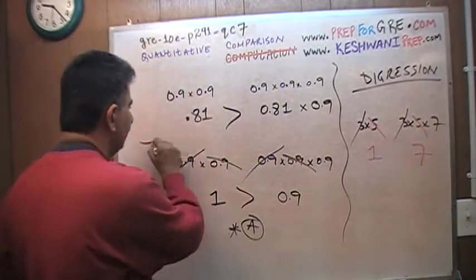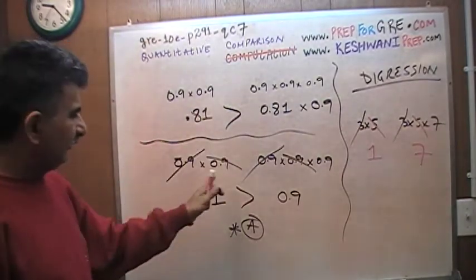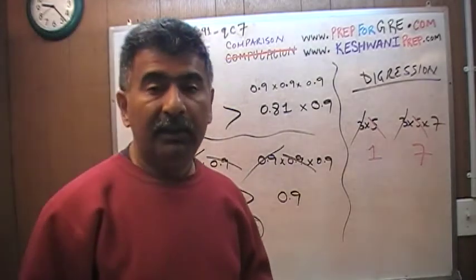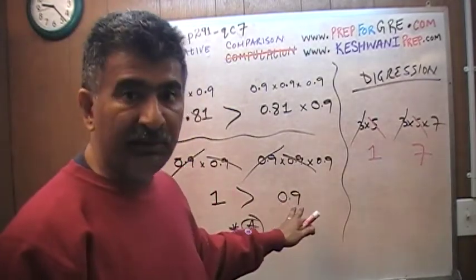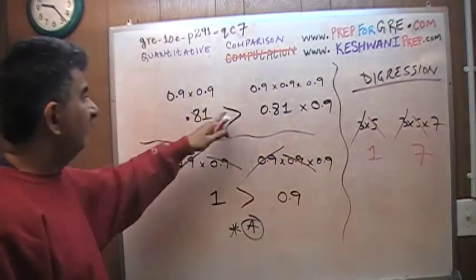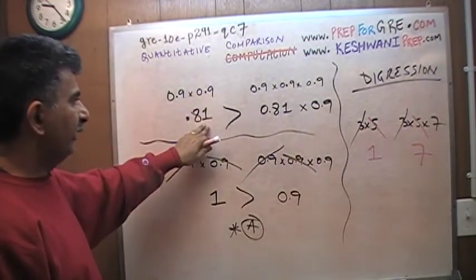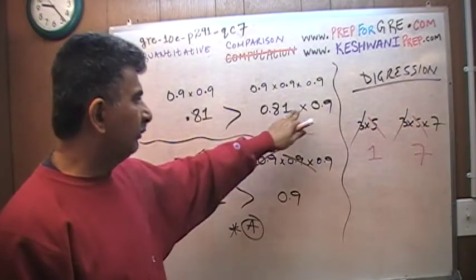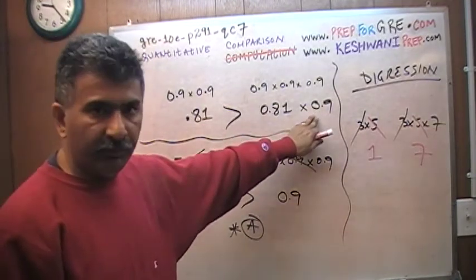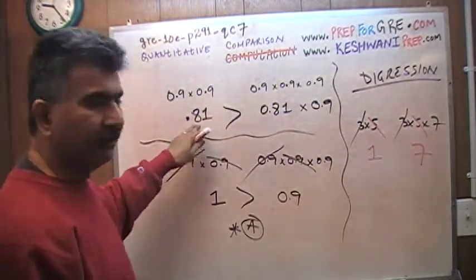But if you don't want to do this method, you can always do the traditional method. This is, strictly speaking, the traditional, academic, proper, classical method, orthodox method, the geeky method, the nerdy method, the mathematical method, what I just did here. This is just for simplicity, if you want to multiply them out. Realize that 0.9 times 0.9 is 0.81. And here we have 90% of 0.81, therefore 90% of 0.81, whatever the hell it is, you don't have to waste your time trying to figure it out. Just understand that 90% of something has to be less than the something. That's all.